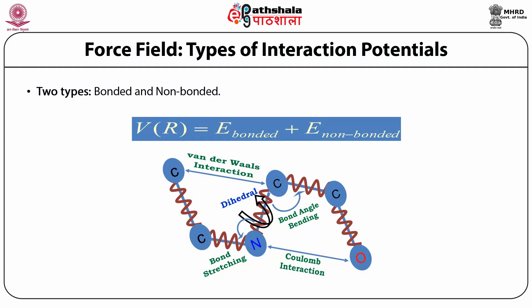Force field means the interaction potentials. Force fields can be subdivided into two types: bonded and non-bonded interaction potentials, the sum of which gives the total potential on the molecule. In a molecule composed of atoms like carbon, nitrogen, and oxygen, bonded potentials arise from bonding properties — the sharing of electrons — and include bond stretching potential, bond angle bending potential, and dihedral potential. Non-bonded potentials include Van der Waals interaction between two neutral atoms and Coulomb electrostatic potential between two charged atoms.